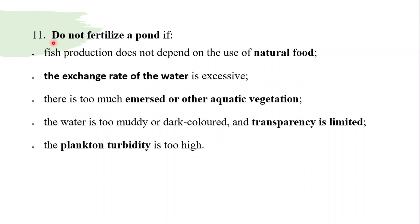Do not fertilize a pond if: fish production does not depend on the use of natural food; the exchange rate of the water is excessive; there is too much immersed or other aquatic vegetation; the water is too muddy or dark colored and transparency is limited; or the plankton turbidity is too high.